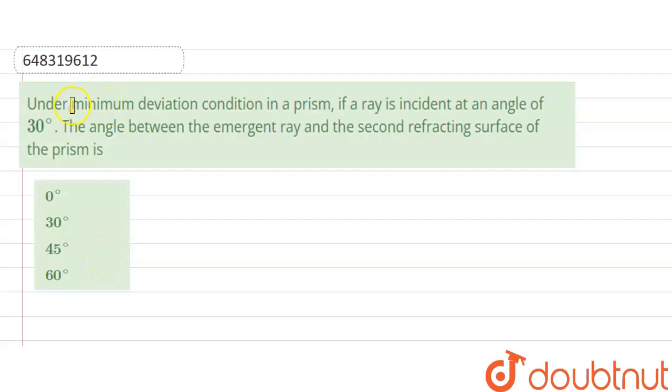Hello friends, our question is under minimum deviation condition in a prism. If a ray is incident at an angle of 30 degrees, the angle between the emergent ray and the second refracting surface of the prism is?